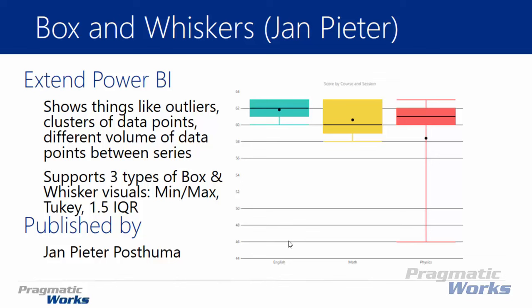The chart may be a little confusing at first to read, but it does have some advantages — it takes up much less space and makes it much easier to look at and compare a distribution of values. It lets you see things like outliers, clusters of data points, and different volumes of data points across different series. These different lines and boxes have meaning, so let's talk about the meaning of the whiskers and the boxes.